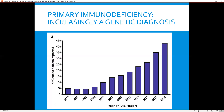Are there any somatic features that the patient has, like short stature, microcephaly, or poor wound healing? Is there a family history of malignancy, infection, or autoimmunity? Are the exposures that they've had unusual? We can use all these questions to help us in both pediatric and adult patients.